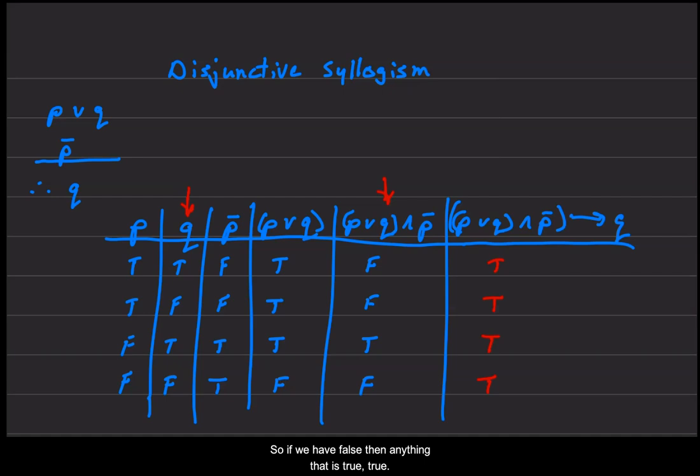So if we have false then anything that is true, true disjunctive syllogism. And then false, false then anything is true. Therefore this is a tautology. So this will be our next rule of inference. This is disjunctive syllogism.